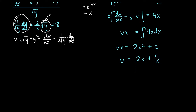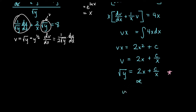Now we back-substitute: v equals square root of y. So square root of y equals 2x plus c over x. You can leave this as an implicit solution. With a caution that squaring both sides can introduce extraneous solutions, you could write y equals (2x plus c over x) all squared — but verify any solution obtained this way.